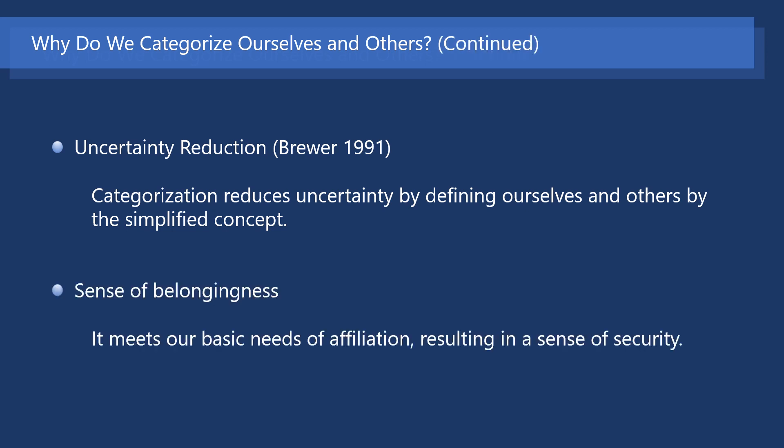Besides, by categorization, we can position ourselves in a certain group of people. It gives us a sense of belongingness, which meets our basic needs of affiliation and makes us feel a sense of security. We can form categories based on only a single feature, such as nationality. However, social categories can be based on multiple features. For instance, we sometimes categorize people based on their nationality as well as the culture of the nation.